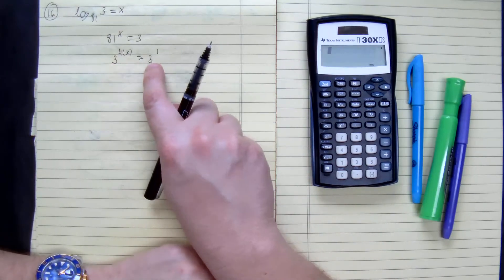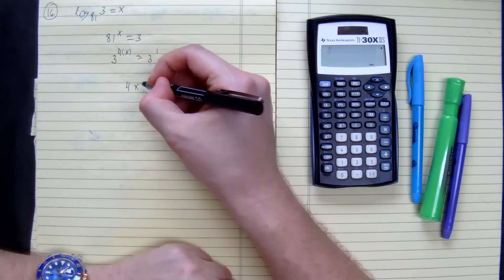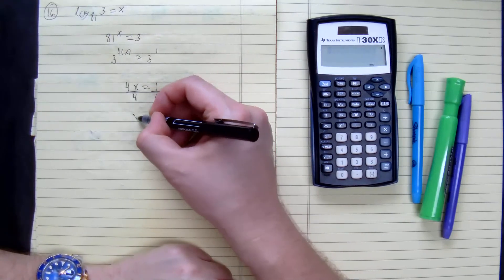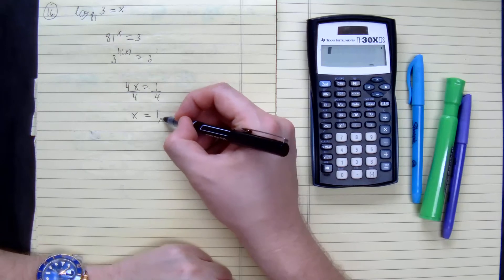Now that we have the same base, we can do 4x equals 1. Divide both sides by 4. You get x equals 1 fourth.